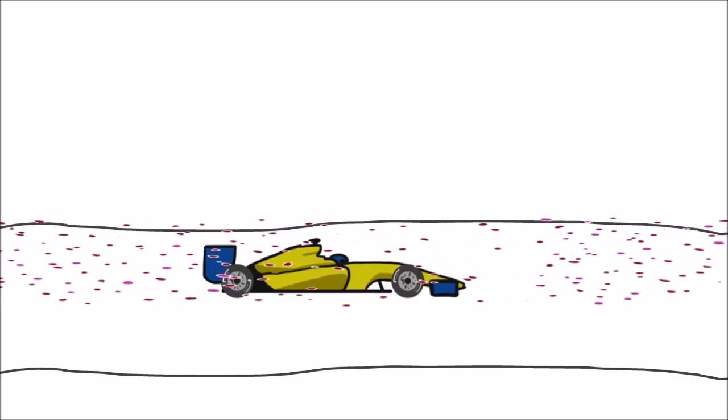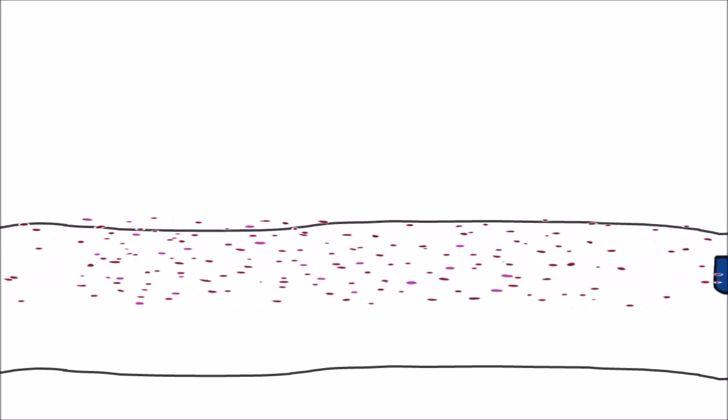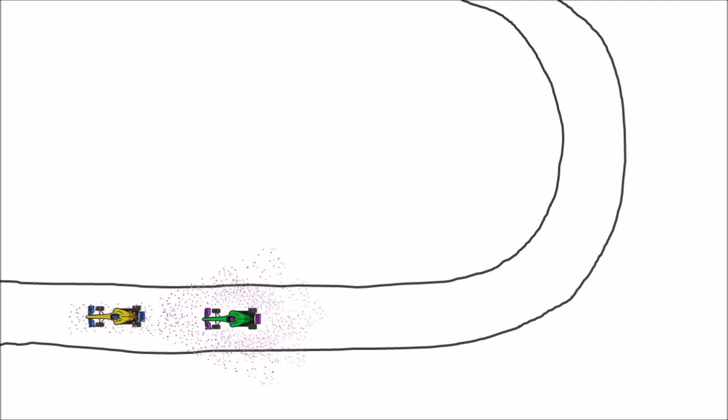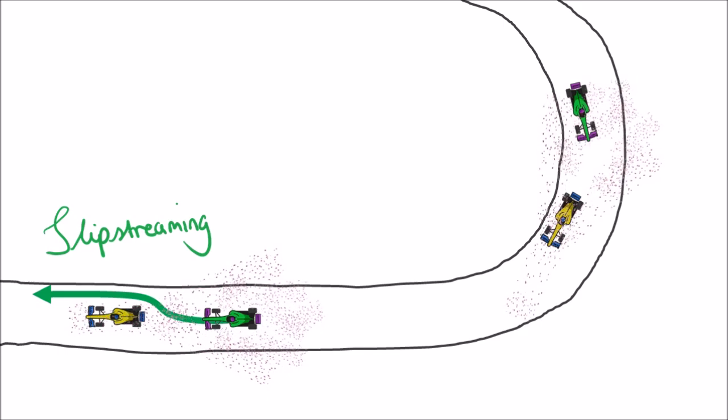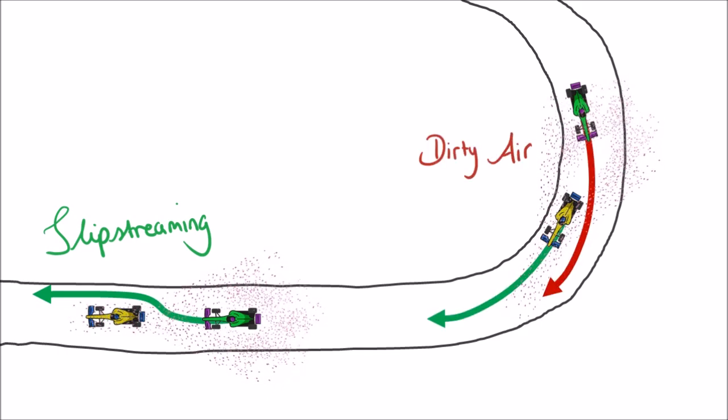That's the long and the short of it, really. A concise summary would be this. Slipstreaming reduces drag for the car directly behind, giving them a speed advantage on the straights. Dirty air reduces downforce from the car behind, giving them a speed disadvantage in the corners.